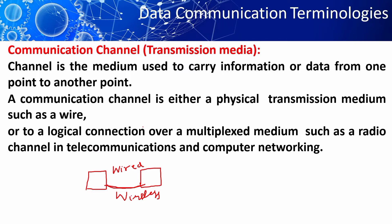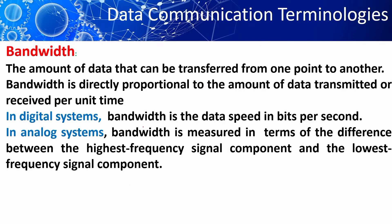Now, we will discuss bandwidth. It is directly proportional to the amount of data transmitted or received per unit time. Sometimes, while using the internet, our speed becomes low, which means its bandwidth becomes low. For example, it takes more bandwidth to download an image file in a second than to download a page of text in a second.